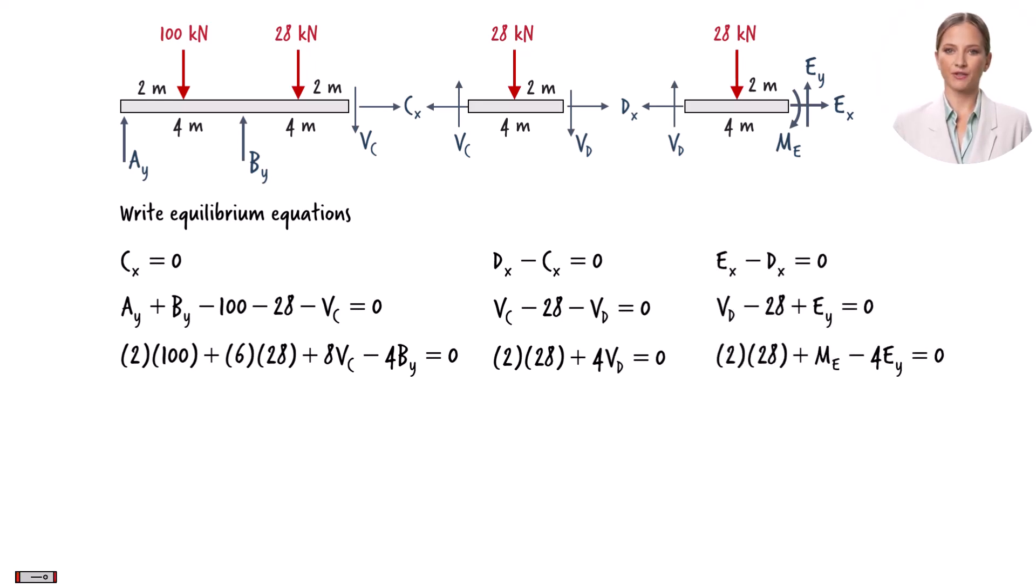These nine equilibrium equations embody nine unknown variables. There are five unknown support reactions, and four unknown axial and shear forces, located at the two internal hinges.